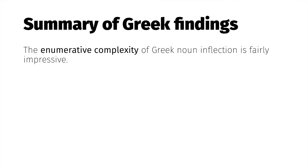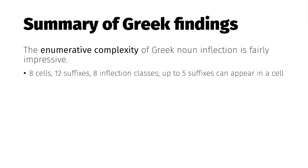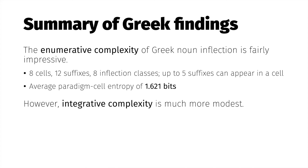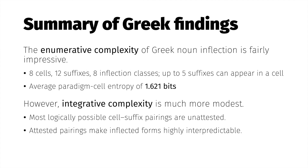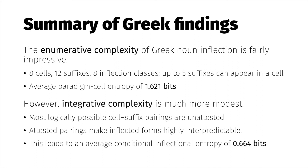Let's summarize. We've used information theory to show that the enumerative complexity of Greek noun inflection is fairly high — there are eight paradigm cells, 12 phonologically distinct suffixes, eight inflection classes, and across these classes a given paradigm cell can be associated with up to five distinct suffixes. An average paradigm cell entropy of 1.62 bits reflects this abstract inflectional complexity. However, the integrative complexity, which better measures the difficulty of speaking Greek fluently, is quite a bit lower, because most suffixes are found in only a few cells and the attested cell-suffix relationships are highly interpredictable. An average conditional entropy of 0.66 bits reflects this.